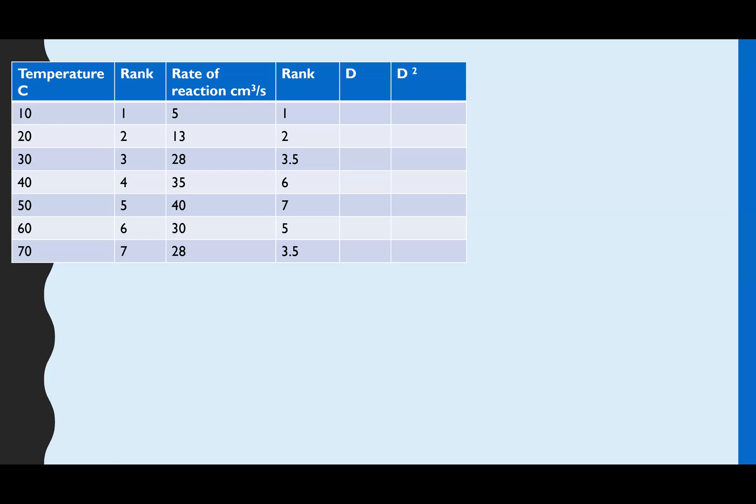However we have at temperature 30 and 70 the rate of reaction for both of those is 28. So if they're the same they need to have the same rank. And the way that you do this is you look at which ranks they would fill up so it would be rank 3 and rank 4 and then it is the average of those two ranks. So if we do the average of 3 plus 4 which is 7 it would be 3.5. So that now means position 3 and 4 are taken. So our next highest is 30 and that would take rank 5. 35 is rank 6 and then we've got rank 7.